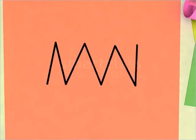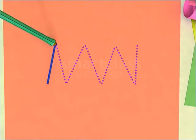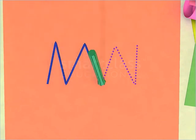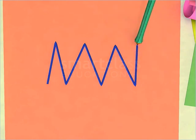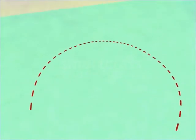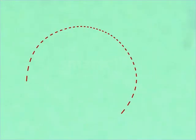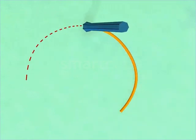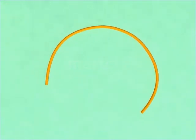Here is another figure. Run your pencil along its outline. Here too, the start and end points of the figure are different. Here again, you do not come back to the same point from where you began. Such figures that have different start and end points are called open figures.